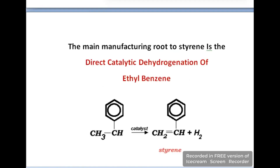For the production of polystyrene we use styrene as a raw material. First of all we will produce styrene with the help of ethylbenzene, and that ethylbenzene will undergo a catalytic dehydrogenation process in which we will get styrene.